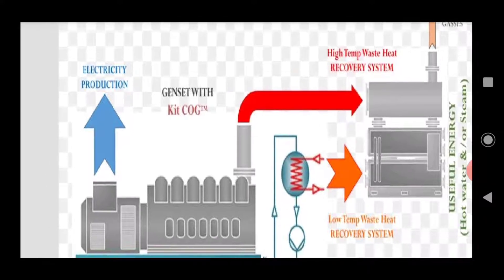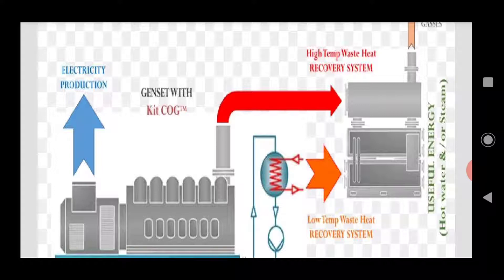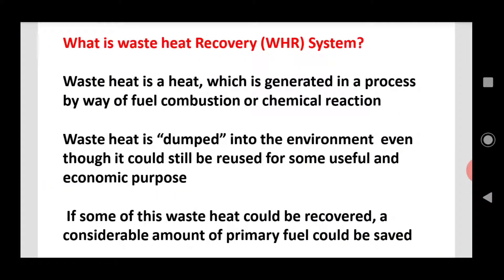If you want to use a boiler, you can use a high temperature. We are going to preheat the water. We will preheat the water — heat it to 100 degrees centigrade — and the cold water will come in at around 80 degrees. So we need to be able to save the fuel. Some amount of waste heat could be recovered and a considerable amount of primary fuel could be saved.